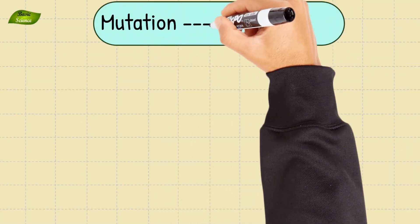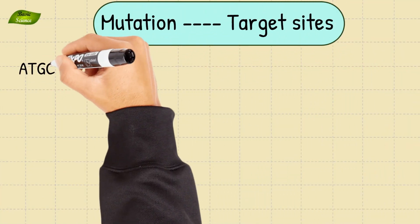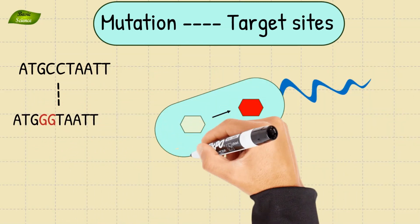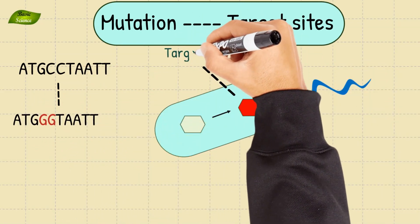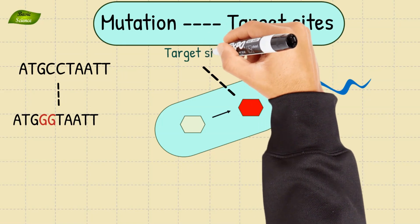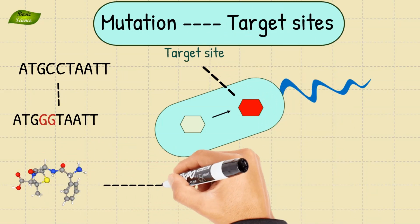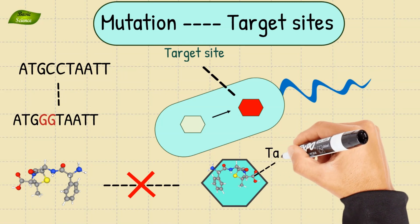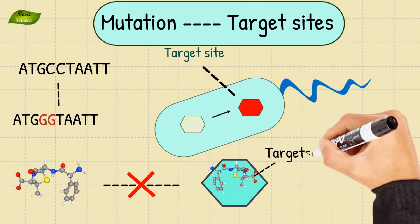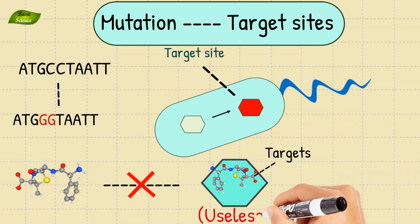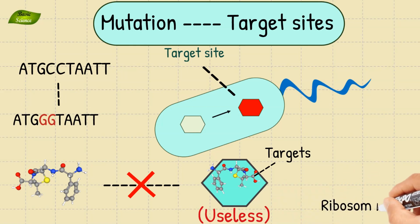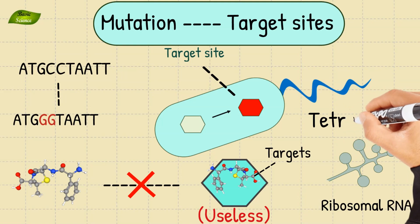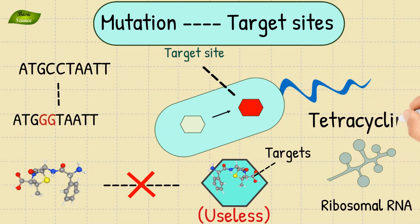One mechanism is the mutation of target sites. Bacteria can undergo spontaneous mutations in their DNA that affect the target sites of antibiotics. This alteration prevents the drugs from binding effectively to their intended targets, rendering them less effective or entirely useless. An example includes mutations in bacterial ribosomal RNA that can reduce the affinity of antibiotics like tetracycline.